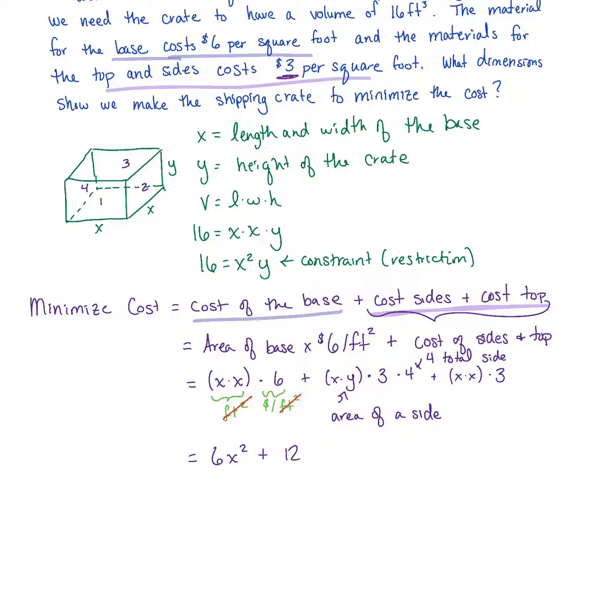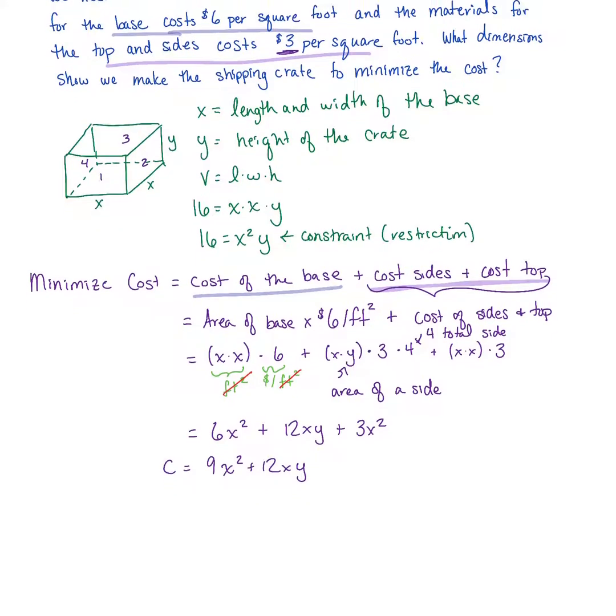We have 6x squared for the cost of our base, then 12xy for the cost of our four sides all together, and then 3x squared for the cost of the top. We can simplify and get 9x squared plus 12xy by combining our like terms. Here's our cost function.